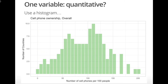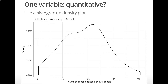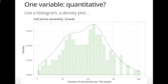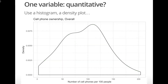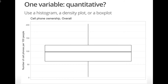Instead of a histogram, we could also use a density plot to visualize the distribution of number of cell phones per 100 people. This might be a new graph type for some of you, but essentially, as you can see, it's a smooth version of the histogram. Finally, there's a third graph type we can use to visualize the distribution of a quantitative variable: a box plot.